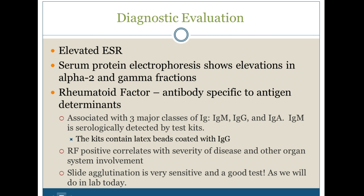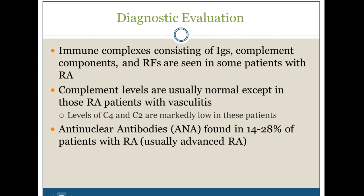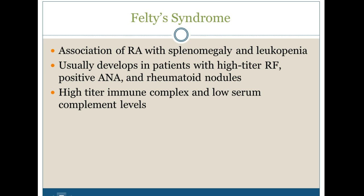Rheumatoid factor positive correlates with the severity of the disease and other organ system involvement. Slide agglutination is a very sensitive and good test, as we will do in lab this week. We see immune complexes consisting of immunoglobulins, complement components, and rheumatoid factors in some patients. Complement levels are usually normal except in those with vasculitis, where C4 and C2 levels are markedly decreased. Anti-nuclear antibodies, which we talked about in a previous section, are only found in 14 to 28 percent of patients with very advanced RA.